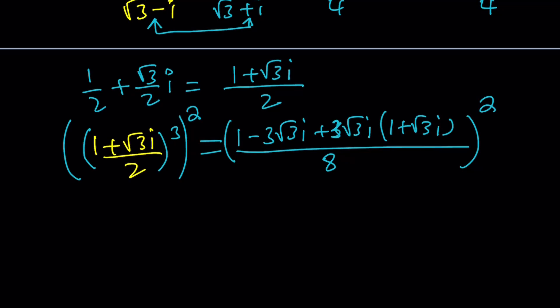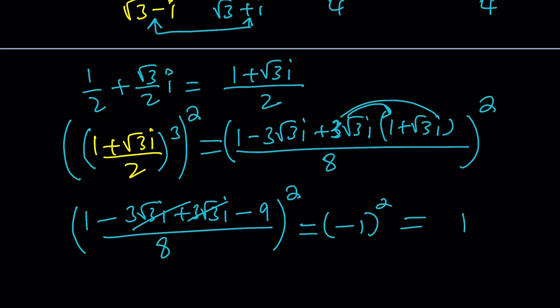And if you simplify this you're going to notice these two cancel out. And these two are going to give me minus 9, right? Because 9i squared divided by 8 and then it'll be squared. 8 is to cancel out. Negative 8 divided by 8 is negative 1. If you square negative 1 you get positive 1. Yay! That's the answer.